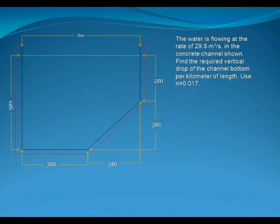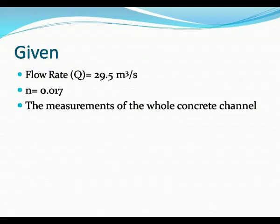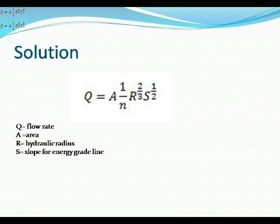kilometer of length. Use n equals 0.017. In our figure, the dimensions of the given concrete channel are shown. First we have the given flow rate equals 29.5 cubic meters per second, n equals 0.017, and also the measurements of the whole concrete channel or the dimensions.